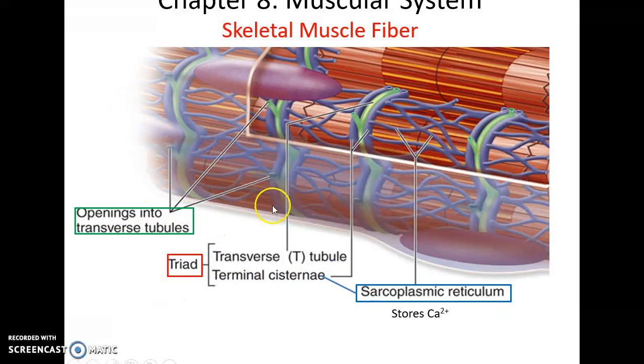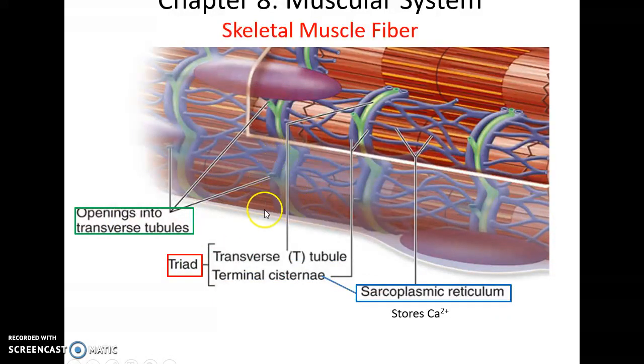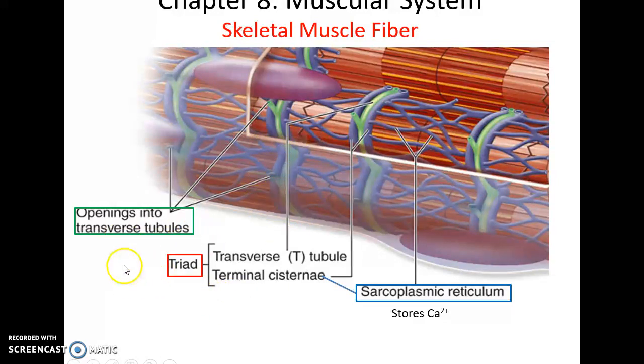If you take a close-up look, you can see how the sarcoplasmic reticulum ends up lying next to the transverse tubules. This arrangement is called a triad.